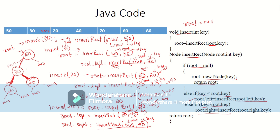All the other elements are inserted following the same steps. This is how the recursive insertRec method is called to insert a node into the binary tree. Hope you understood the concept of insertion and the logic behind the code. Thank you for listening.